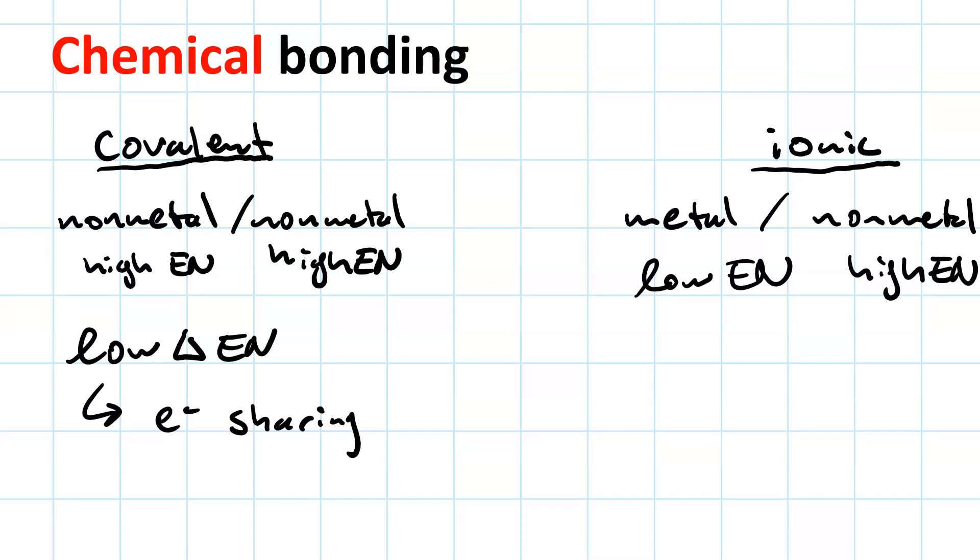That means the metal will lose an electron. That electron will go to the non-metal. And so you end up with a metal cation and a non-metal anion. And then the attractive force between the positively charged cation and the negatively charged anion constitutes the ionic bond.